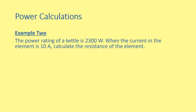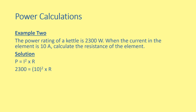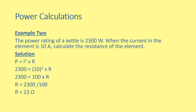Example 2: the power rating of a kettle is 2300 watts. When the current in the element is 10 amperes, calculate the resistance of the element. Following basic physics principles: write the equation, substitute the values. There is some rearrangement involved. It's useful to work out the squared calculation first — 10 squared equals 100 — then rearrange to find the resistance value of 23 ohms. This doesn't normally cause too much difficulty.